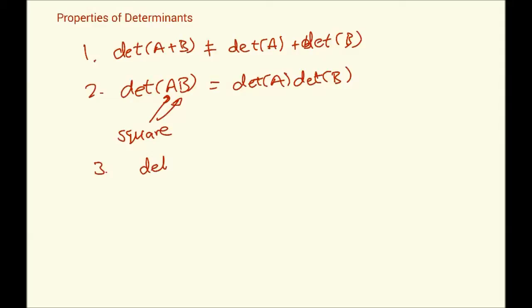Yet another property, a very interesting one: if you have a scalar k multiplying a matrix A, and if A is an n by n matrix, then the determinant of kA equals k to the power n times the determinant of A. You'll understand why this happens because